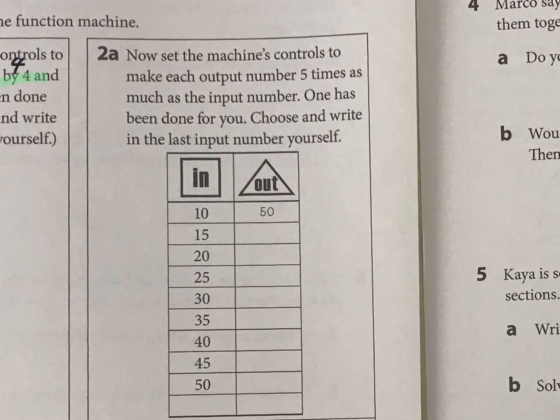Now what we've got here is you're just doing 5 times the number. They've done the first one for you: 15 times 5 will be 75, 20 times 5 is 100, and pretty soon you're gonna see some patterns because it's going up by 5 each time. What is the pattern you see here? The next one would be 125.